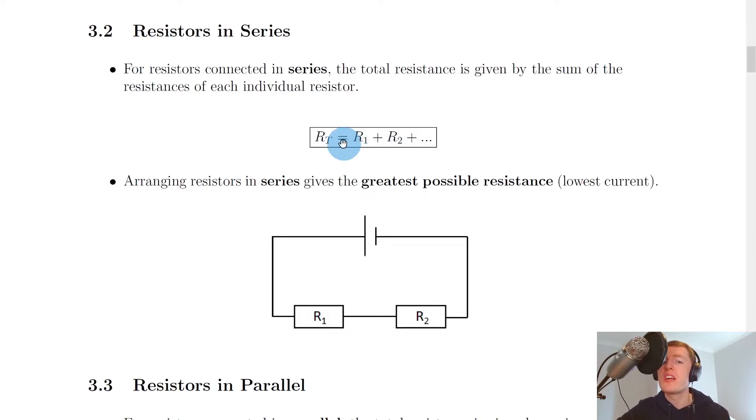In order to find the total resistance when we've got more than one resistor, we can just add up the resistances, so it's nice and simple. RT equals R1 plus R2 plus dot dot dot, where you would continue this until you get to the number of resistors that you have in your circuit.